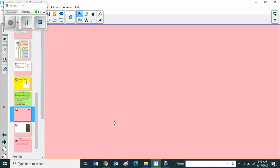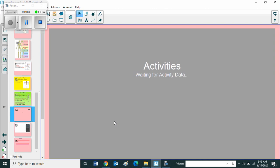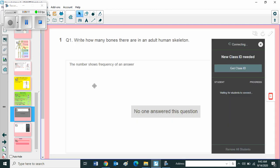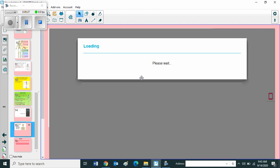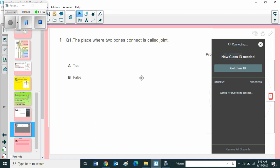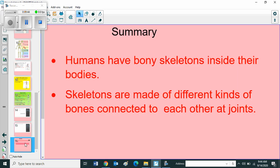Then children, next one is a smart lab activity. Your first question is, write how many bones there are in an adult human skeleton. I know children, you know the answer. Please you can type the answer. Next one is, also smart lab activity. That is true or false question. First question is, the place where the two bones connect is called joint. Is it true or false? We have to find out, is it true or false?